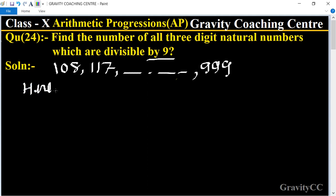Here a equals 108, and d equals a₂ minus a₁, which equals 117 minus 108, equals 9.